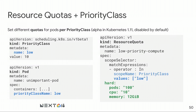As of Kubernetes 1.11 alpha, you can combine resource quotas with priority classes. If you want to allocate five CPUs specifically for high-priority workloads, this is how you do it. On the left I define a low priority class, then create a pod with that priority class. On the right, I set a resource quota in this namespace scoped to the low priority class — allowing up to 100 of these pods, with a total of 10 CPUs and 12 gigabytes of memory.